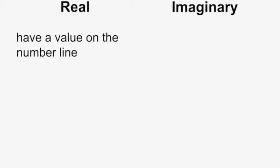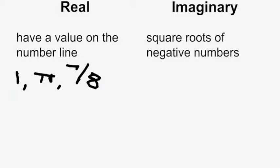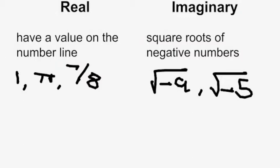Chapter 1.1 is on the sets of numbers. The first two sets you have to worry about are real numbers and imaginary numbers. Real numbers are numbers that have a value on the number line, such as 1, pi, or 7 eighths. Imaginary numbers are square roots of negative numbers, such as the square root of negative 9 and the square root of negative 5, which are not real numbers.